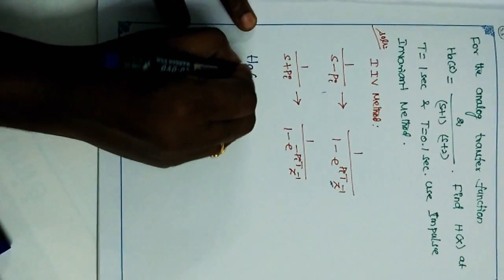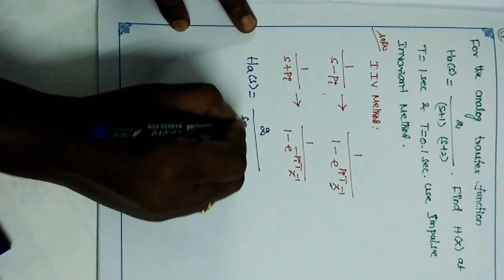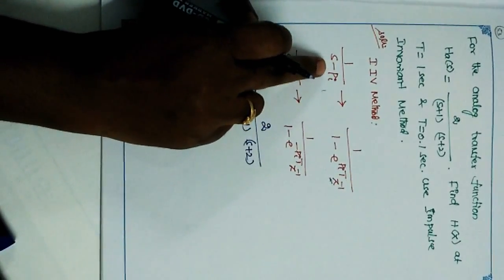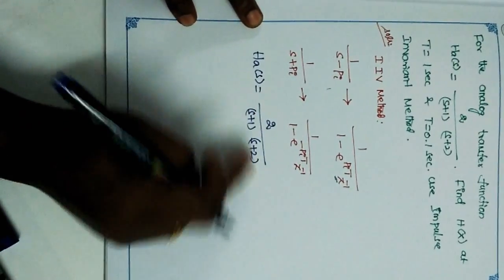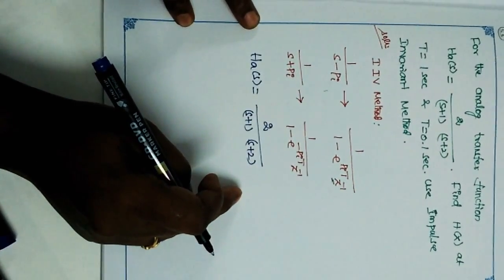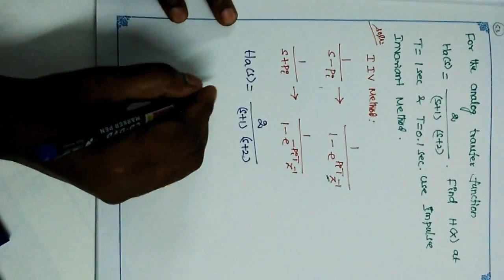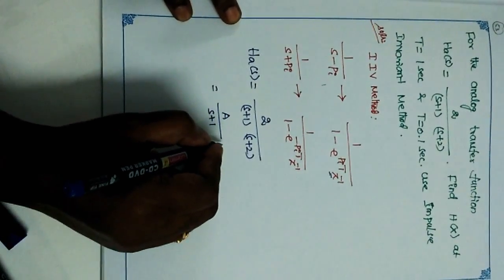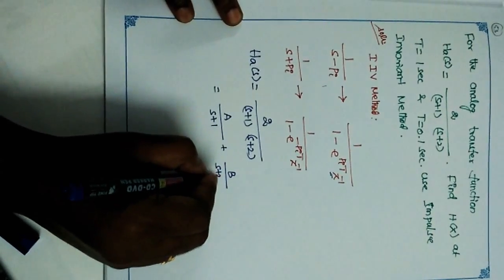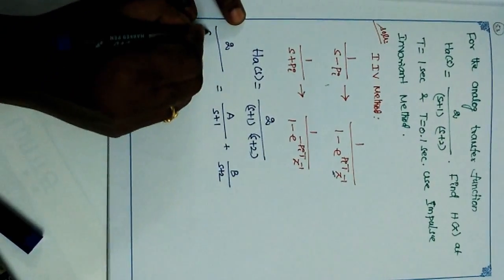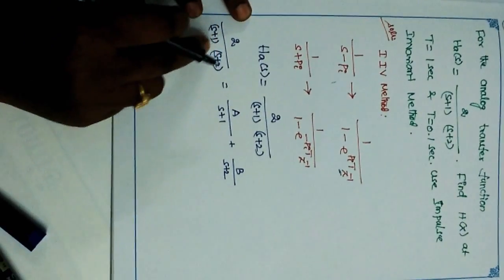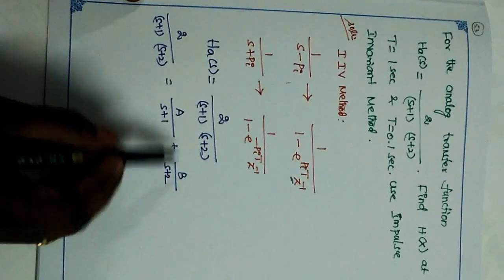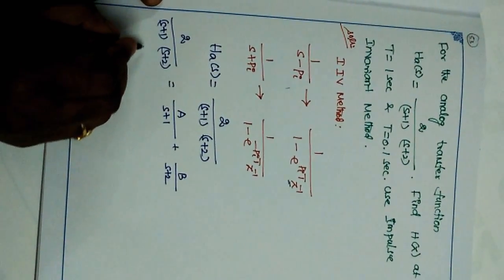The given problem is H_a(s) = 2 / [(s+1)(s+2)], which is not in the form 1/(s+p_i). We need to separate it using the partial fraction method. We split it into A/(s+1) plus B/(s+2), which equals 2/[(s+1)(s+2)]. Now we find the A and B values using cross multiplication.